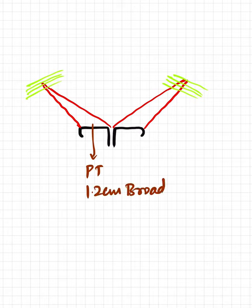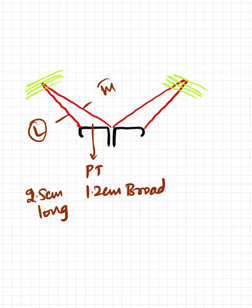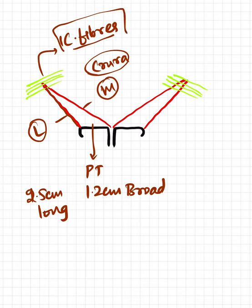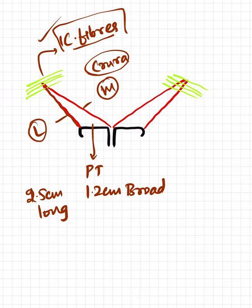The length of the superficial inguinal ring triangle is 2.5 centimeters. The lateral and medial margins are formed by the lateral crura and medial crura respectively. These two crura meet at the apex and are joined by the intercrural fibers. The function of the intercrural fibers is to prevent excess widening of the superficial inguinal ring. The deep ring is oval-shaped and the superficial ring is triangular.